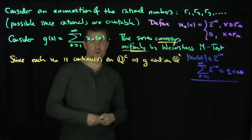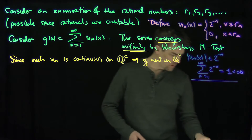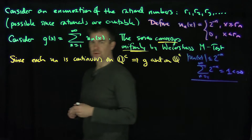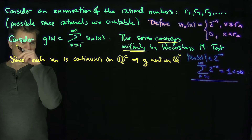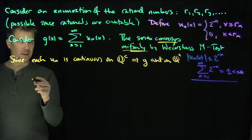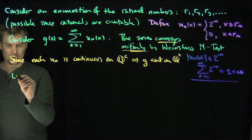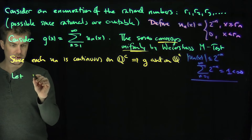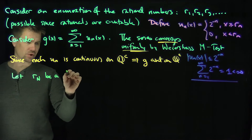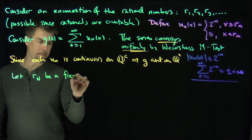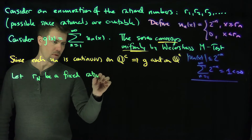However, we're going to show that g is not continuous at the rational numbers. So how do we show that? For example, let's fix a rational number r_n.